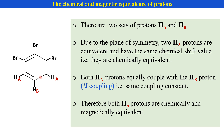Remember, HA protons have the same chemical shift value and they equally couple with the other proton, HB proton — that is, there is the same coupling constant. Therefore, HA protons are chemically and magnetically equivalent.